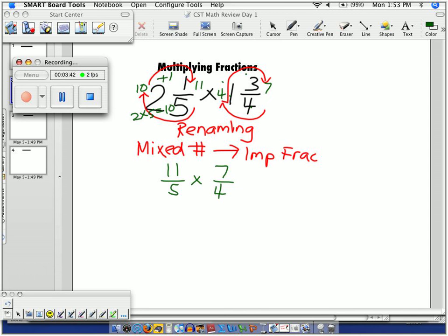Then I simply evaluate. Top times top is 77. Bottom times bottom is 20. This number that I have in blue ink is an improper fraction.